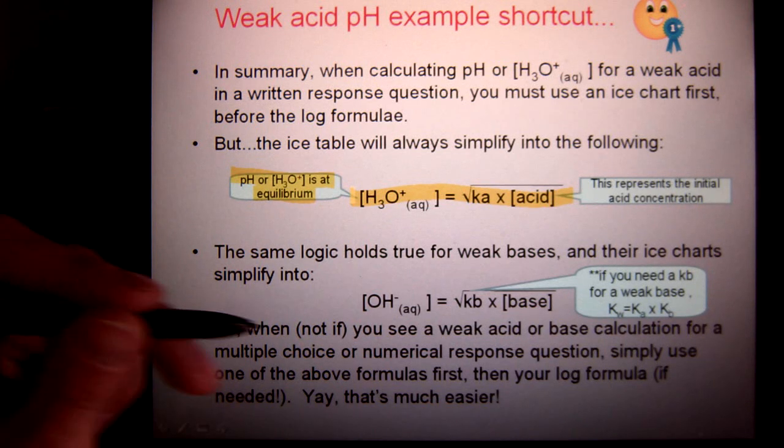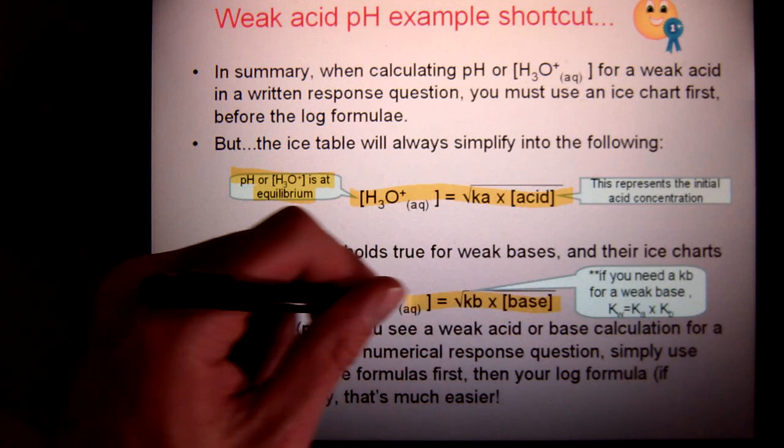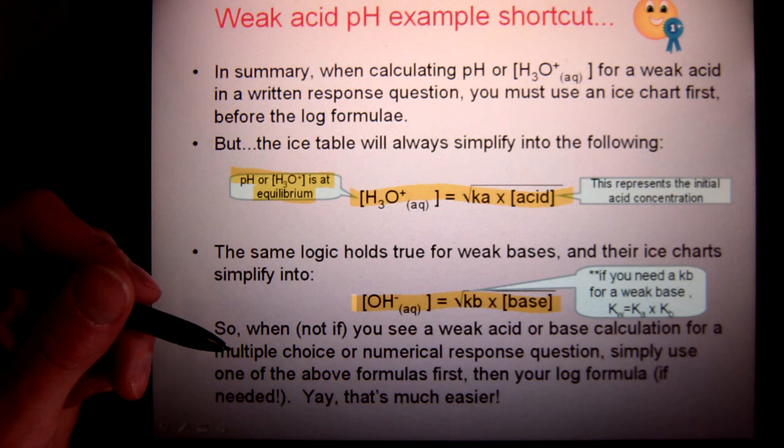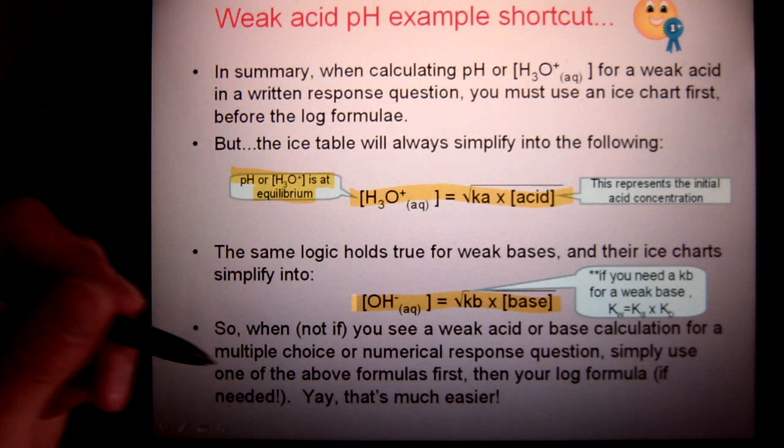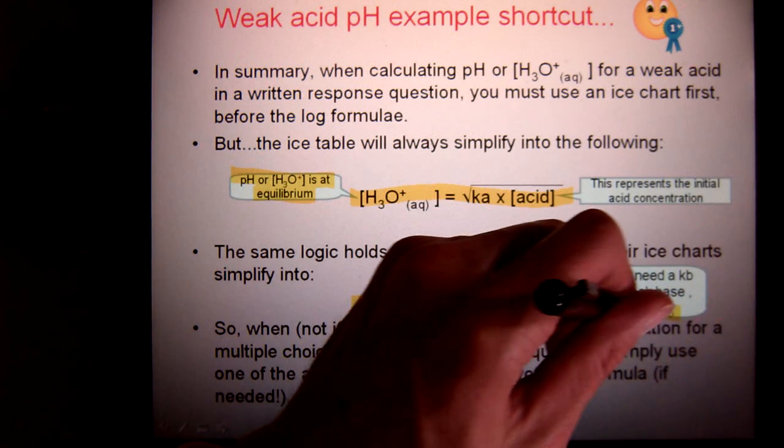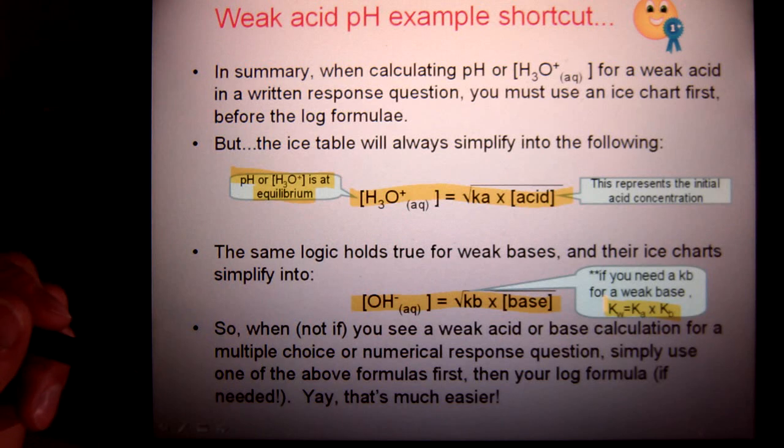Okay? If you're trying to solve for a weak base, same thing. But, now it's going to be hydroxide, square root of the Kb, times the base. And, as mentioned before, you'll need the Kw expression to solve for Kb before you do that. Okay? You don't always have to do this, just when you're dealing with weak acids.